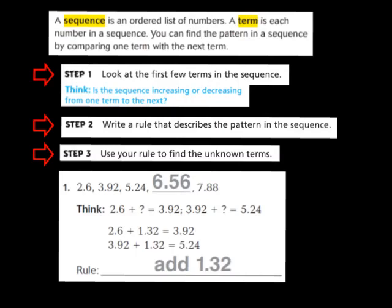Let's take a look at the steps we're going to follow to help us understand patterns with decimals. Step 1 says: look at the first few terms in the sequence. Coming down to question 1, we have 2 and 6 tenths, 3 and 92 hundredths, and then 5 and 24 hundredths. What I need to think about is whether the sequence is increasing or decreasing. Looking at those first few terms, I can see that they are increasing, which means my rule is going to involve addition because the numbers are getting larger.